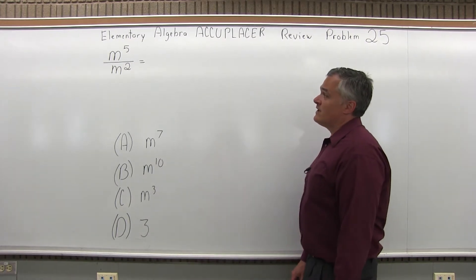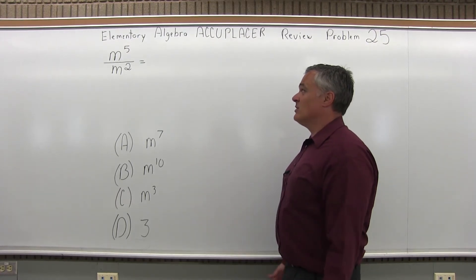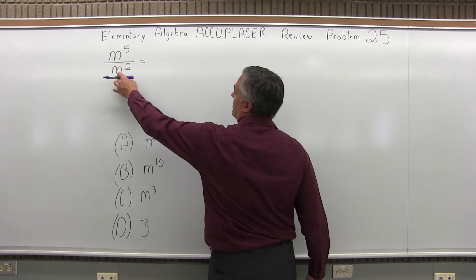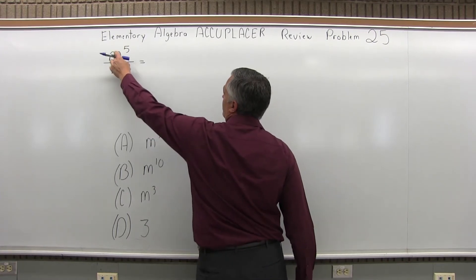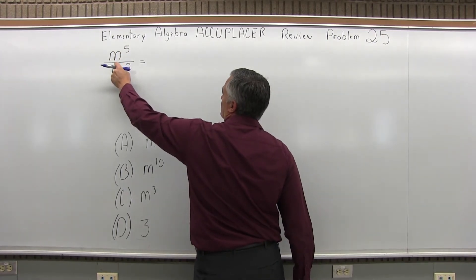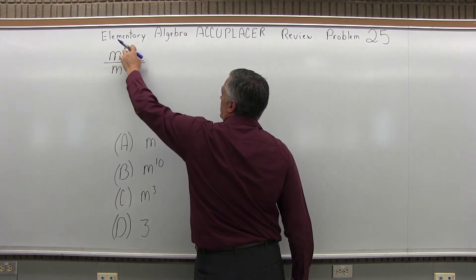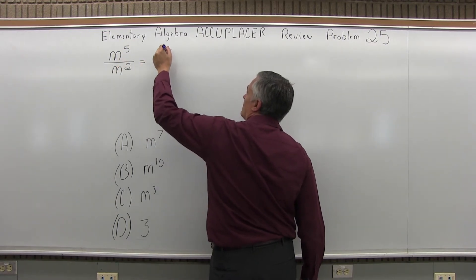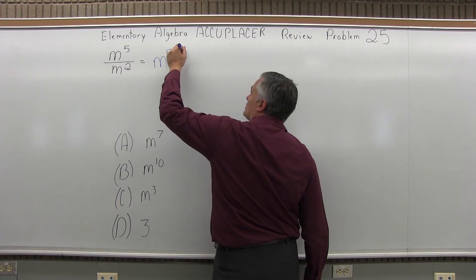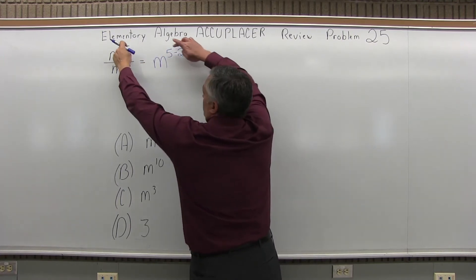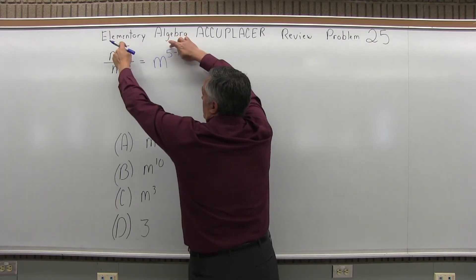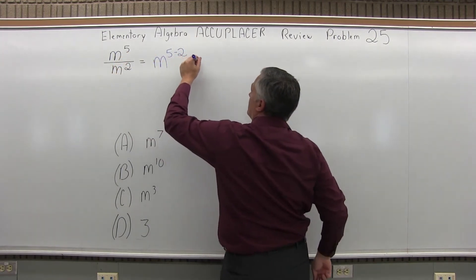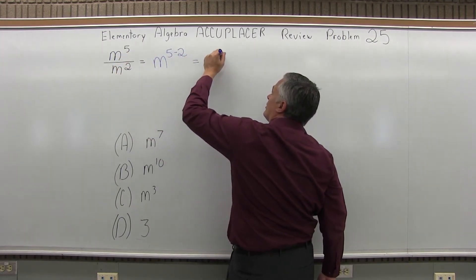m to the fifth over m to the second equals what? The rule for this type of problem is when you have the same variable in a division problem, you want to subtract the exponents. So we're going to have m to the five minus two — five from the numerator, two from the denominator — subtraction because it's a division, giving us m to the third.